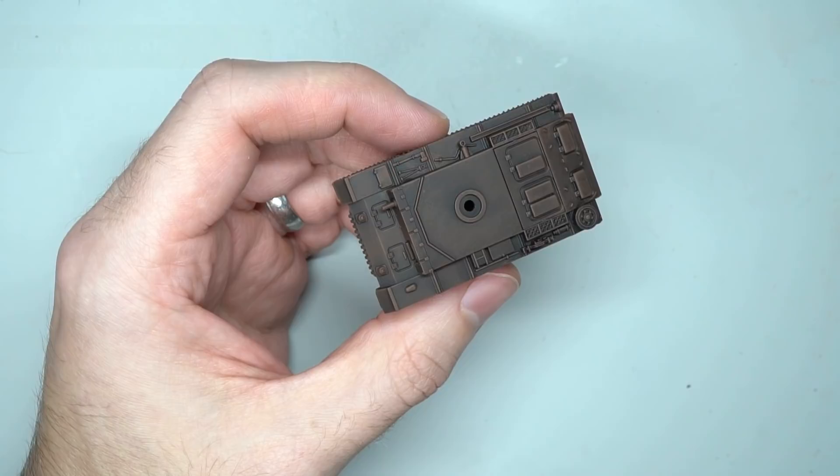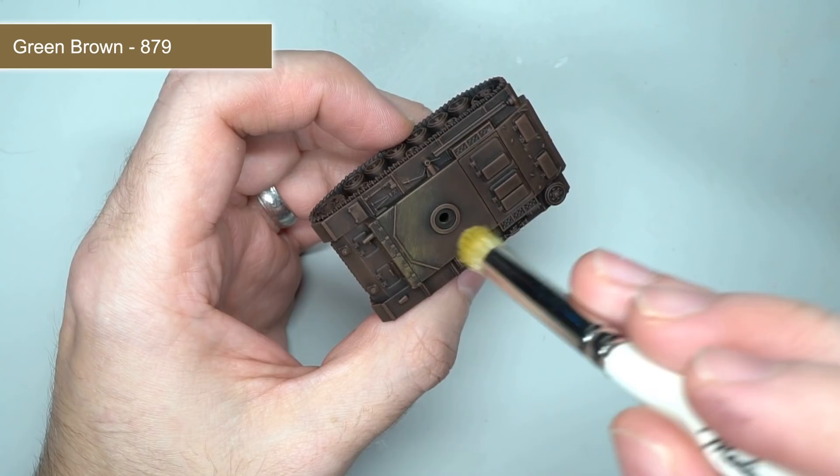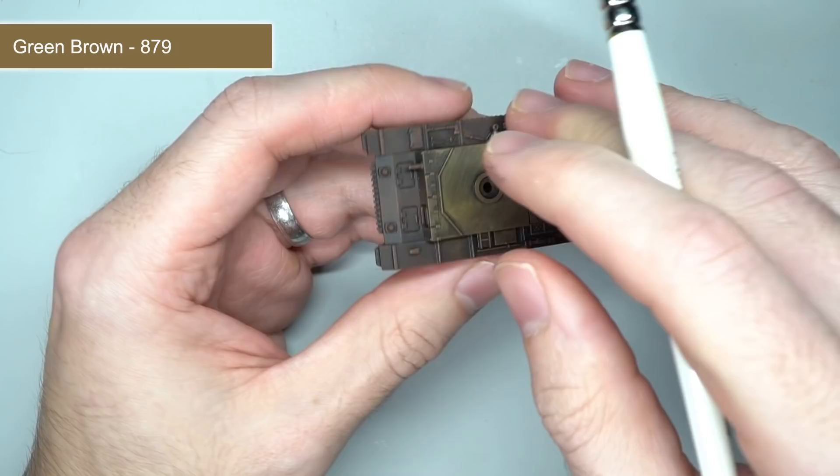To apply the lighter tan colors associated with a desert scheme, I used the same drybrushing technique. This time, I used greenbrown instead. I applied this over the whole vehicle but left the red-oxide color visible on the tracks to represent weathered and dirty track links.